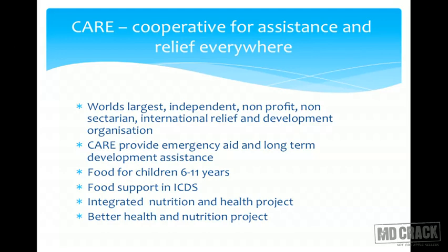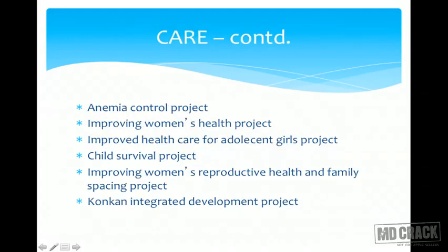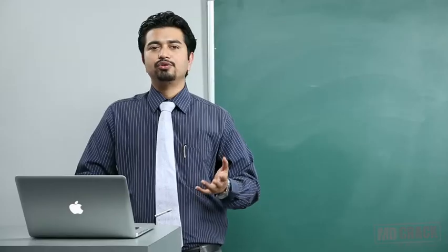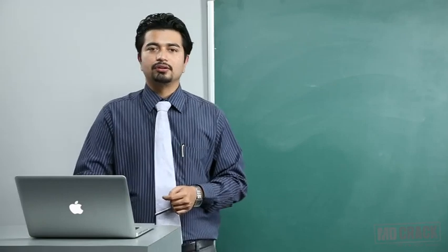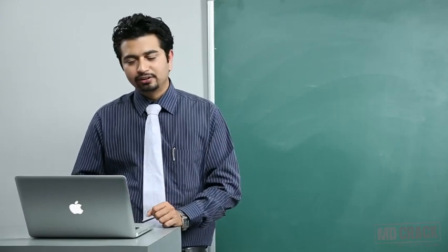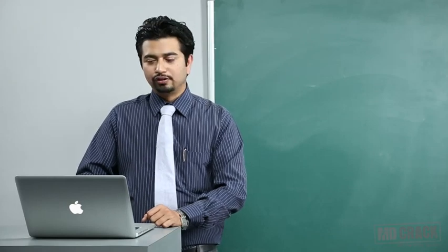What you need to remember: CARE supports ICDS, DANIDA supports the blindness control program, and SIDA supports the tuberculosis control program. CARE also supports the anemia control project and works for improving women's health, improved health for adolescent girls, the child survival project, improving women's reproductive health, and the conquer integrated development project. The Indian Red Cross functions include relief work, milk and medical supplies, armed forces rehabilitation, maternal and child welfare, family planning, blood bank, and first aid. Originally involved with armed forces during war, the Red Cross later extended into peacekeeping activities.